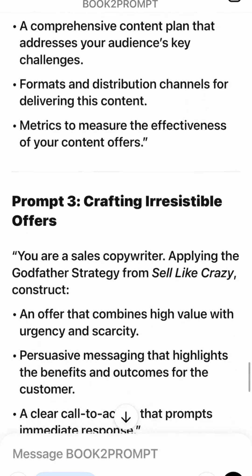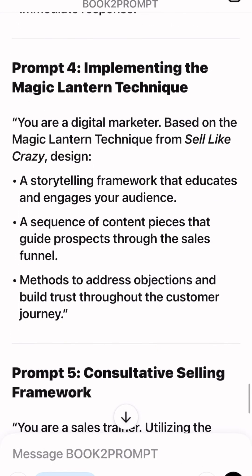I wanted to go straight to the prompt I created called implementing the magic lantern technique. This is what you're going to copy and paste into ChatGPT: 'You are a digital marketer. Based on the magic lantern technique from the book Sell Like Crazy, design one — a storytelling framework that educates and engages your audience; two — a sequence of content pieces that guide prospects through the sales funnel; and three — methods to address objections and build trust through the customer journey.' Try it out and let me know what it gave you and the results you potentially get.